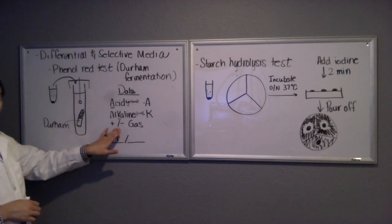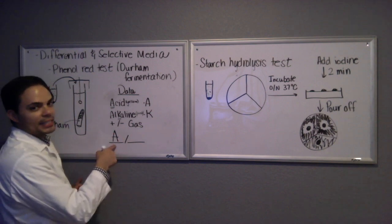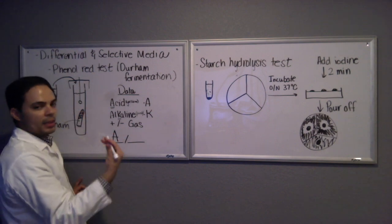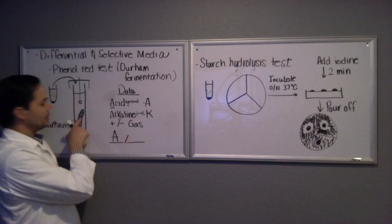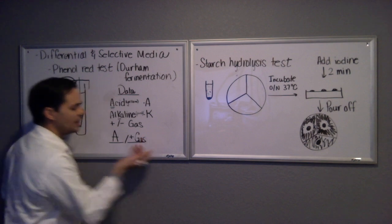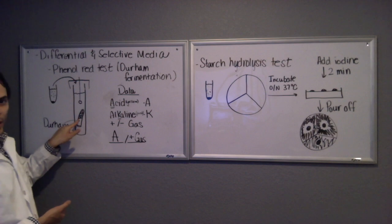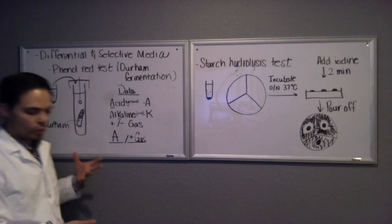The next day when you come back you may see some bubbles in there, and that is the gas you're looking for. So you must write plus gas or minus gas. Let's say we have an acidic yellow solution and there's lots of gas in there, so we would write plus gas and that would be how you log your data.